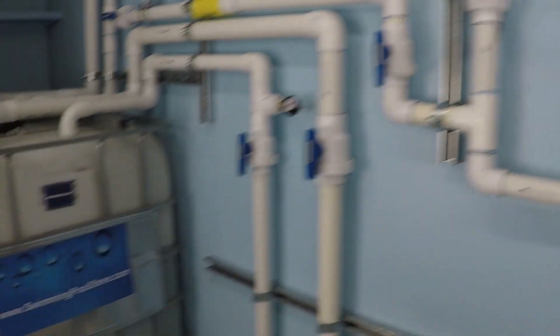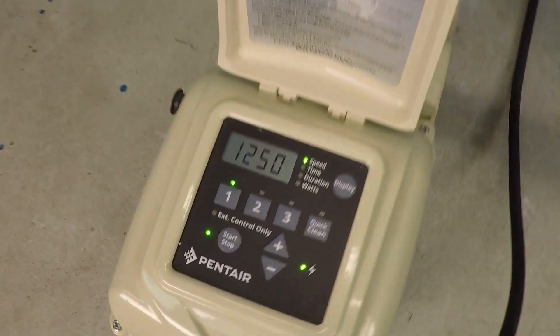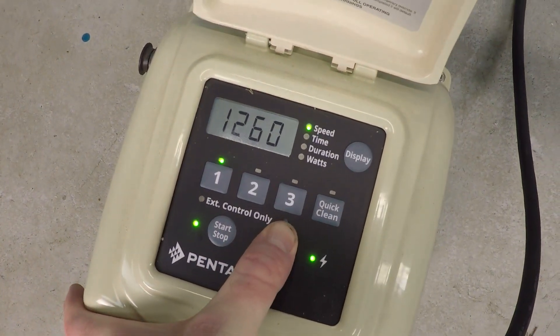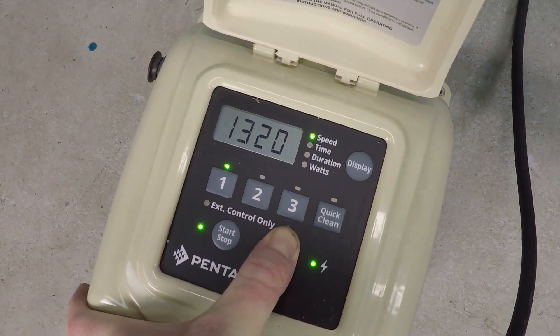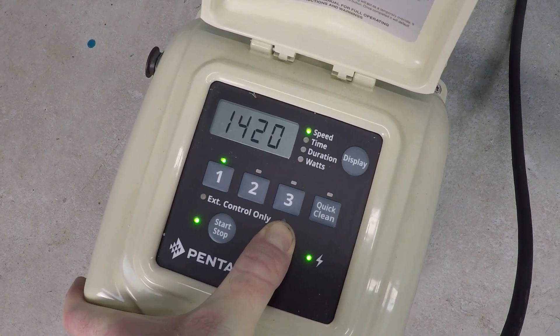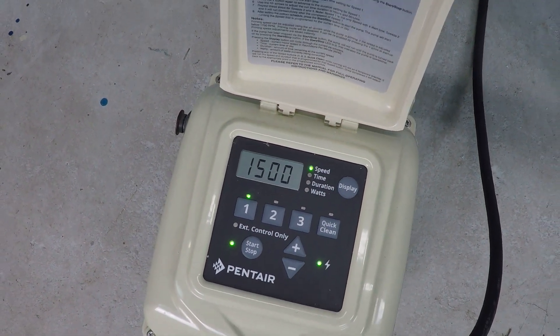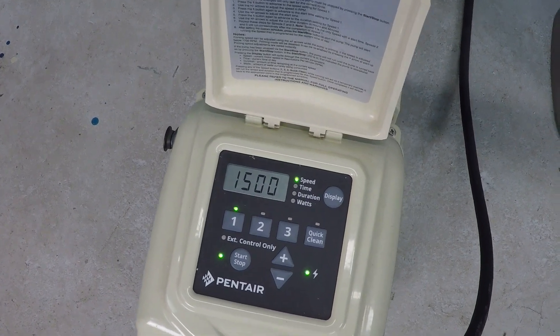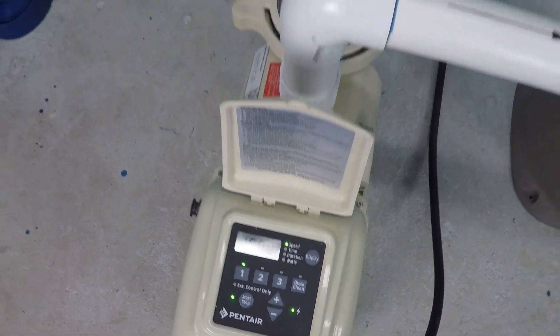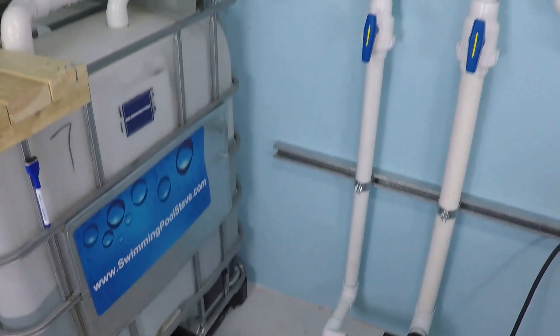186 watts. Again, this is a crazy low amount of power and already look at how much flow you have. This does represent somewhat of a better design system, being that we're testing dual suction lines here and a two inch trunk line system.